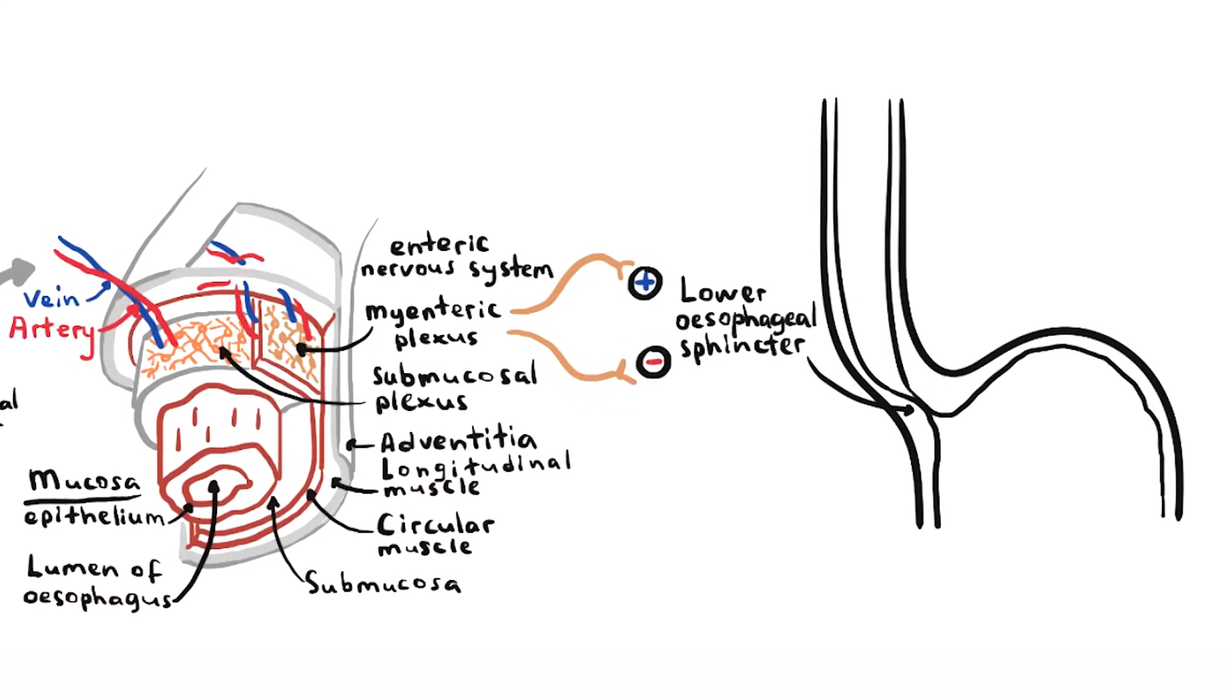The myenteric plexus consists of excitatory nerve cells, which contract the sphincter, preventing reflux of food and acids from the stomach. The myenteric plexus also contains inhibitory nerve cells, which relax the sphincter when food travels down the esophagus to the stomach.